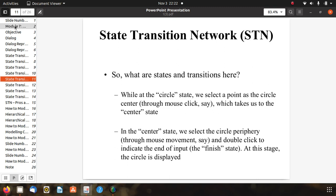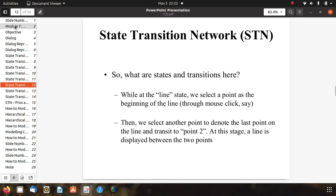While at the line state, we select a point at the beginning of the line using mouse click. We select another point to denote the second point on the line and transition to point 2. At this stage a line is displayed between the two points.